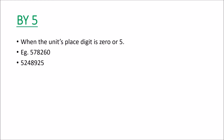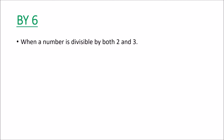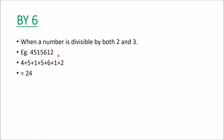Now let us see the divisibility test of 6. Any number is divisible by 6 when it is divisible by both 2 and 3. For our example number, we check divisibility by 2 first: the units digit is even, so it is divisible by 2. Now we check divisibility by 3 by adding all the digits. The sum of these digits is 24, and since 24 is divisible by 3, the number is divisible by 3. Since it is divisible by both 2 and 3, it is divisible by 6.